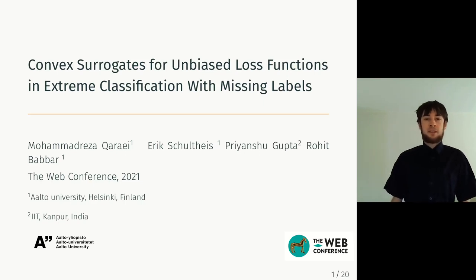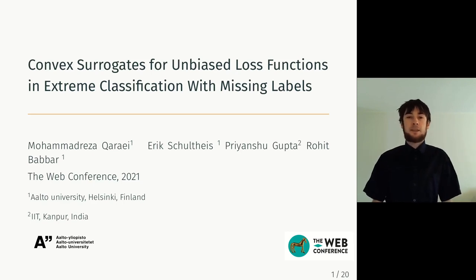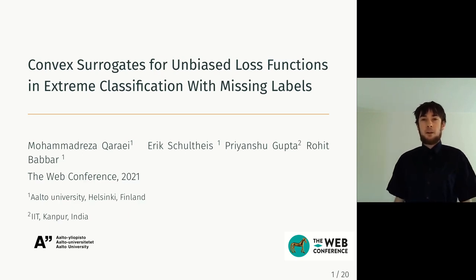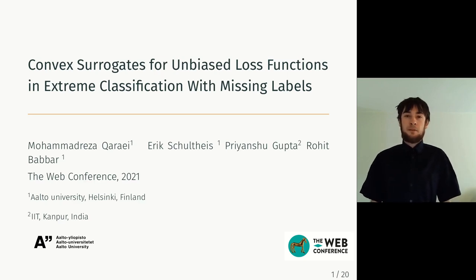Welcome to this talk on convex surrogates for unbiased loss functions in extreme classification with missing labels. That's a rather long title, but over the course of this talk I'll introduce the setting of extreme classification with missing labels and explain what unbiased loss functions and convex surrogates actually mean in this context. The end result will be that I present a slight modification to existing machine learning methods that doesn't require additional computation but results in much improved performance in these settings.